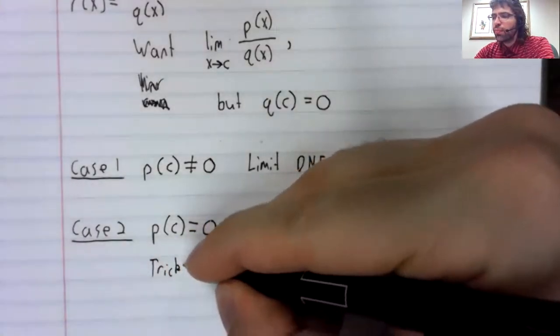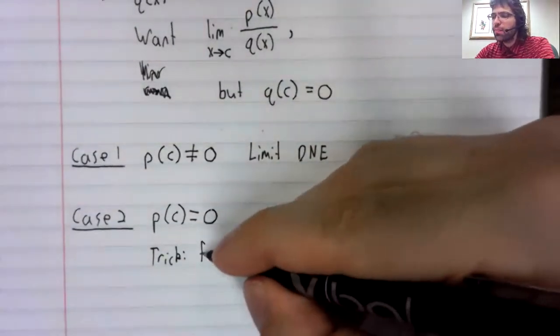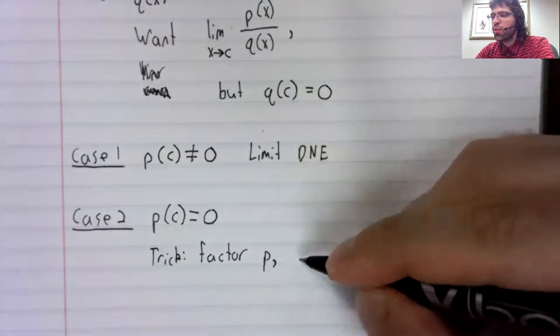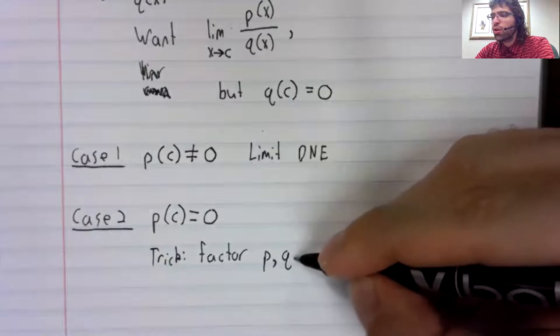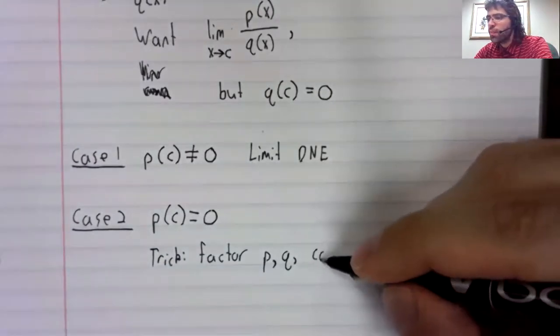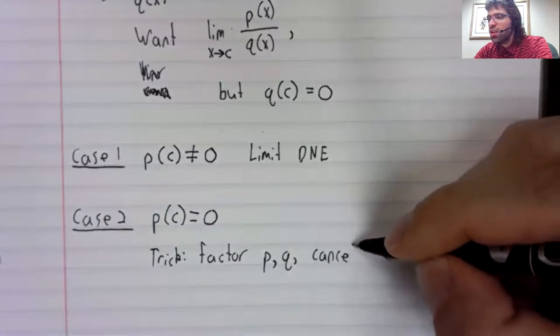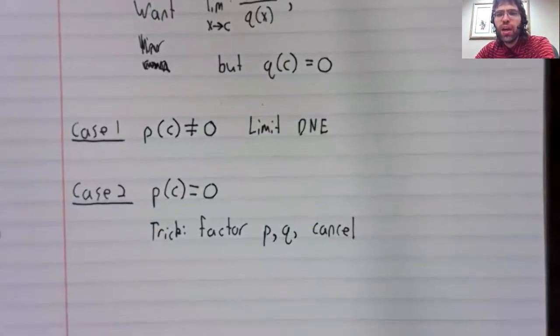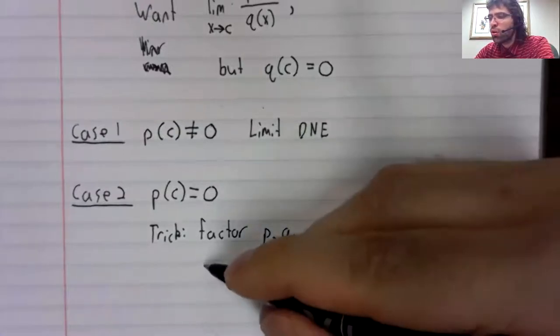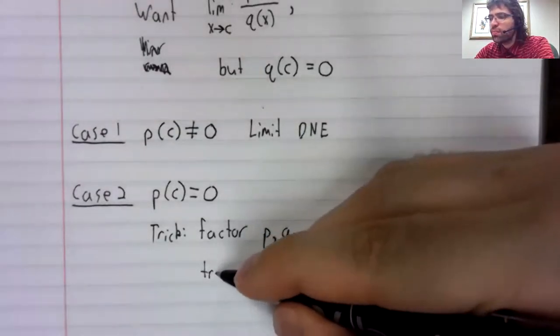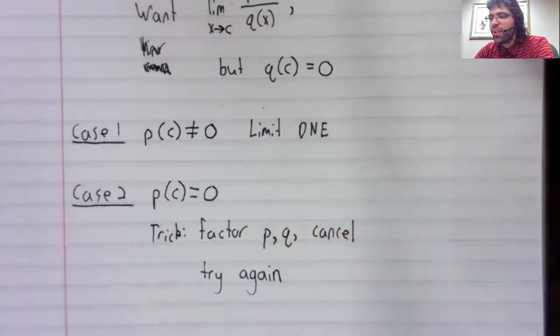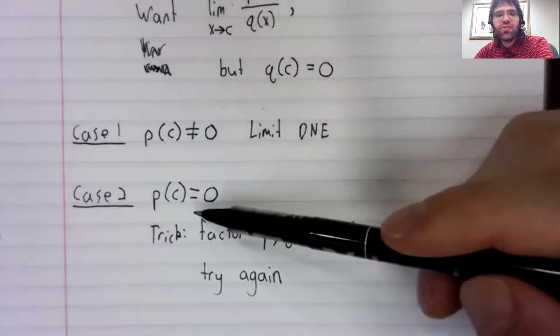Here's our trick. In this case, you will always be able to cancel common terms. And once you've canceled your terms, try again, just sticking c in.